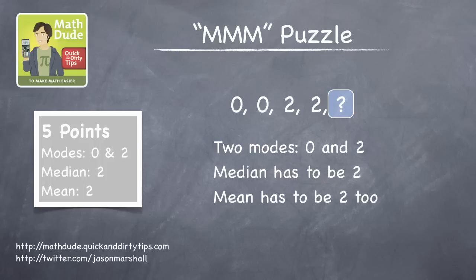So what does the final number have to be to get a mean of 2? Well, there are lots of ways to approach the problem, but here's one. What number divided by 5 is 2? That's right, it's 10. 10 divided by 5 equals 2. So our list of five numbers has to add up to 10 in order for the mean to be 2. Right now, the total is 4. It's 0 plus 0 plus 2 plus 2. So the final number must be 10 minus 4 equals 6.